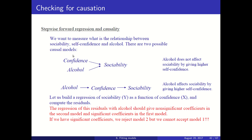In the first model, confidence and alcohol are independent and both affect sociability. In the second model, alcohol affects confidence, and then confidence affects sociability. To determine which of the two models is more compatible with the data, we can perform a regression of sociability as a function of confidence and analyze those residuals. If alcohol affects sociability through confidence, then all the information that alcohol brings to explain sociability is condensed in confidence.